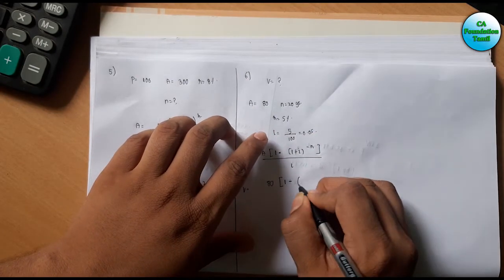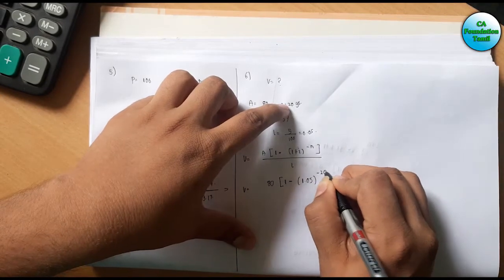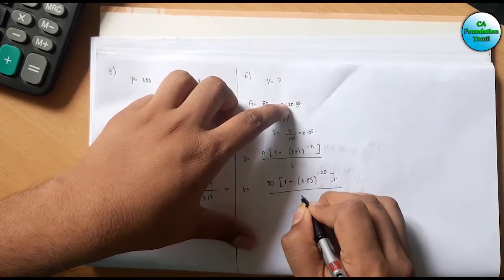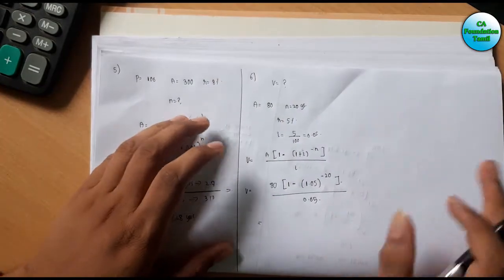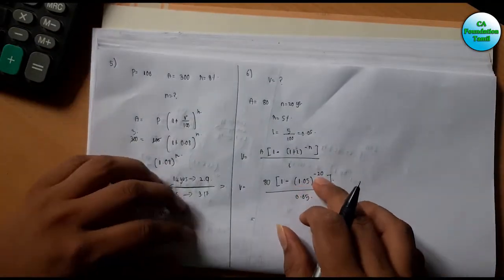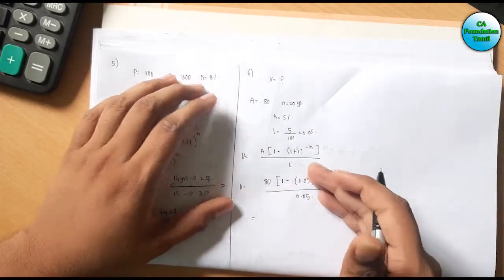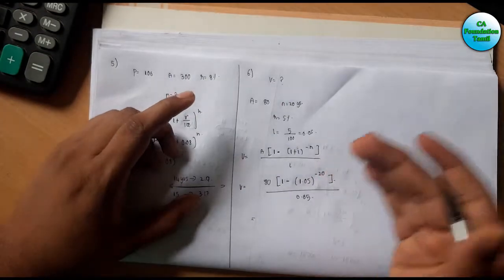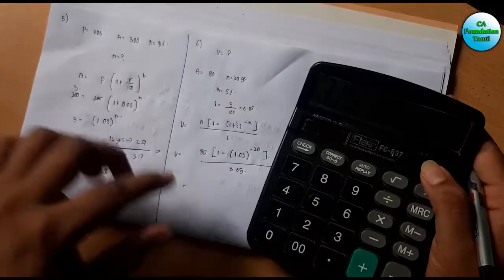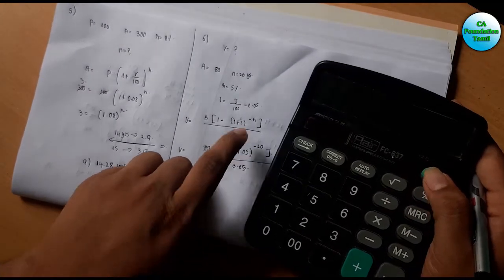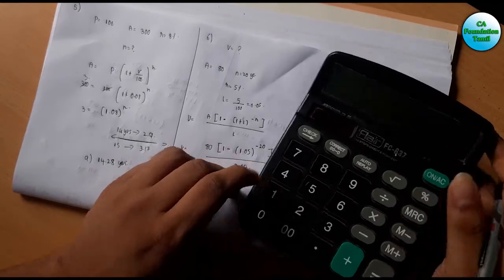Now applying the present value formula. We compute 1.05 to the power minus 20. First calculating 1.05 to the power positive 20 by multiplying 1.05 twenty times.